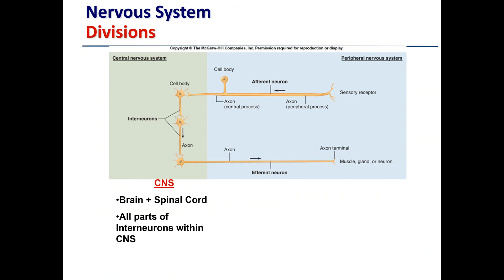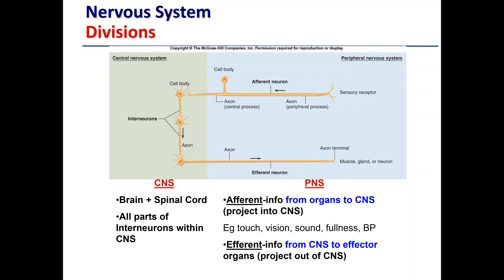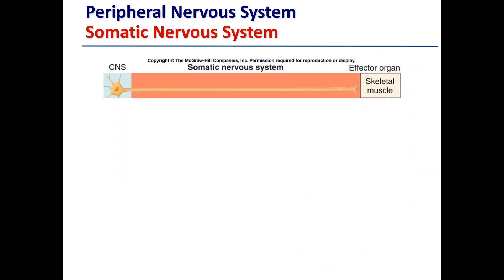The central nervous system contains the brain, spinal cord, and all interneurons housed within the CNS. The peripheral nervous system is made up of afferent neurons — which bring sensory information from the external environment back to the CNS — and efferent neurons, which take information from the CNS out to the effector organs, particularly skeletal muscle. The peripheral nervous system is divided into the somatic nervous system and the autonomic nervous system.